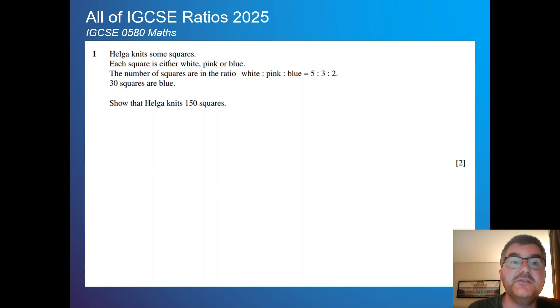So Helga is knitting some squares, either white, pink or blue. And the number of squares are in the ratio white to pink to blue is 5 to 3 to 2. So white has 5, pink has 3, and blue has 2 parts. 30 squares are blue, show that Helga knits 150 squares.